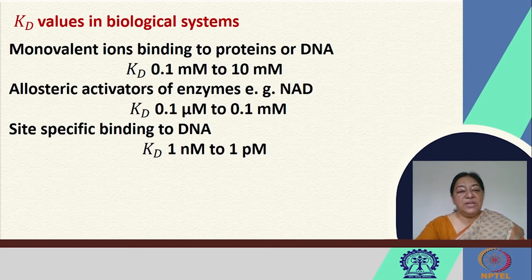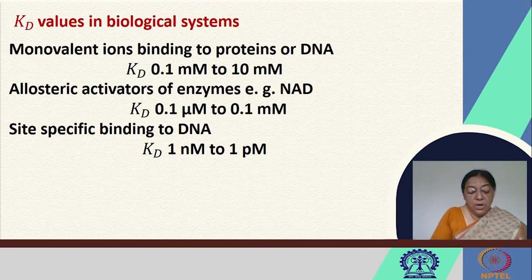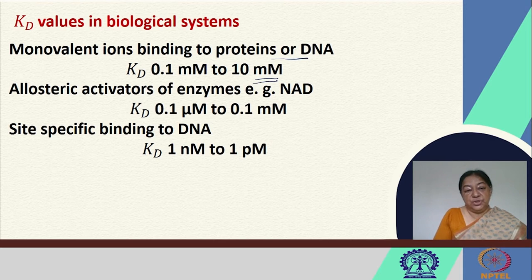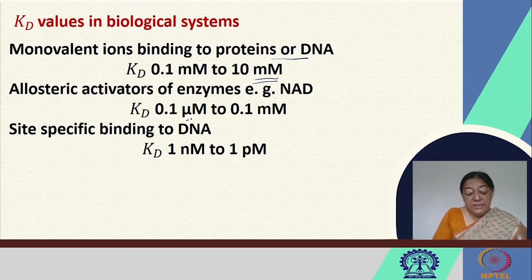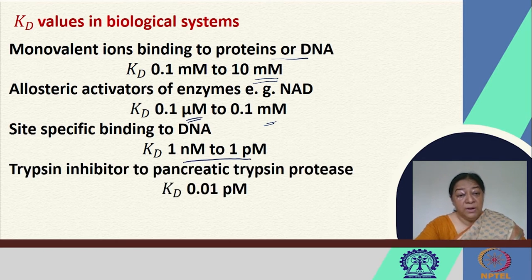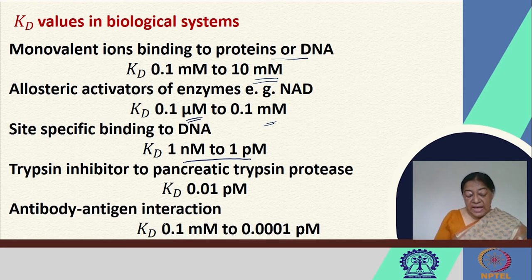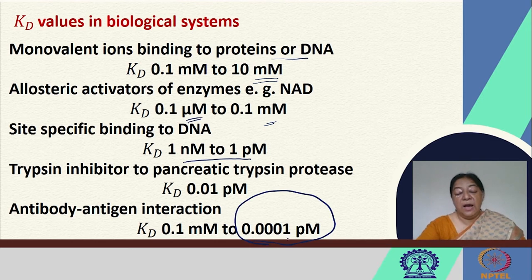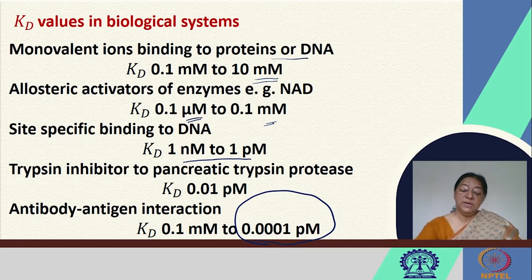Looking at specific KD values for biological systems: monovalent ions binding to proteins or DNA are in the millimolar range; allosteric activators of enzymes range from micromolar to millimolar; site-specific binding to DNA falls in the nanomolar to picomolar range; trypsin inhibitor binding to the protease is also in the picomolar range; and antibody-antigen interactions can have very low dissociation constants, indicating very tight and highly specific interactions.